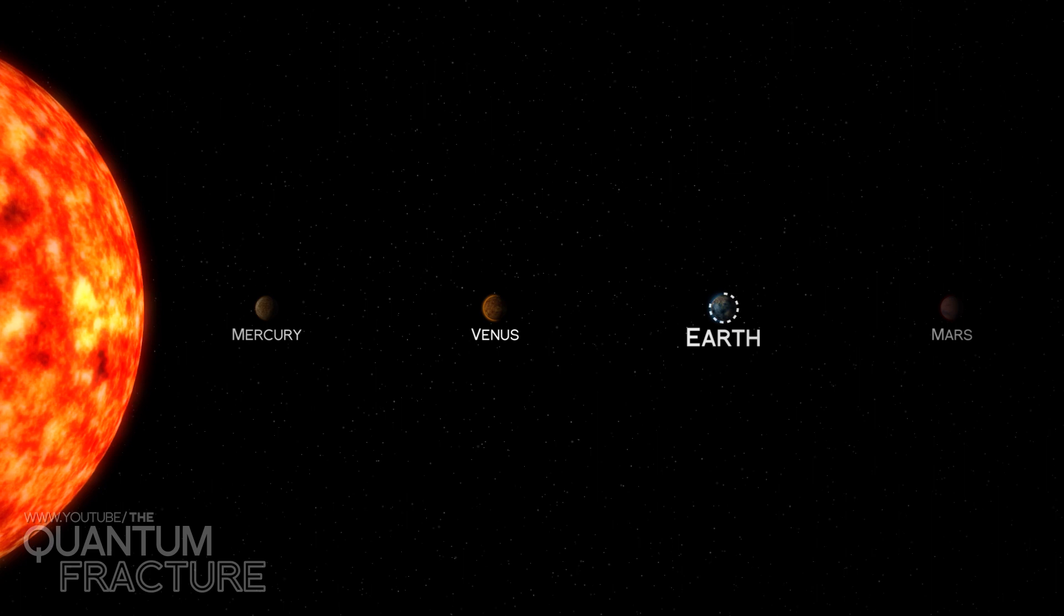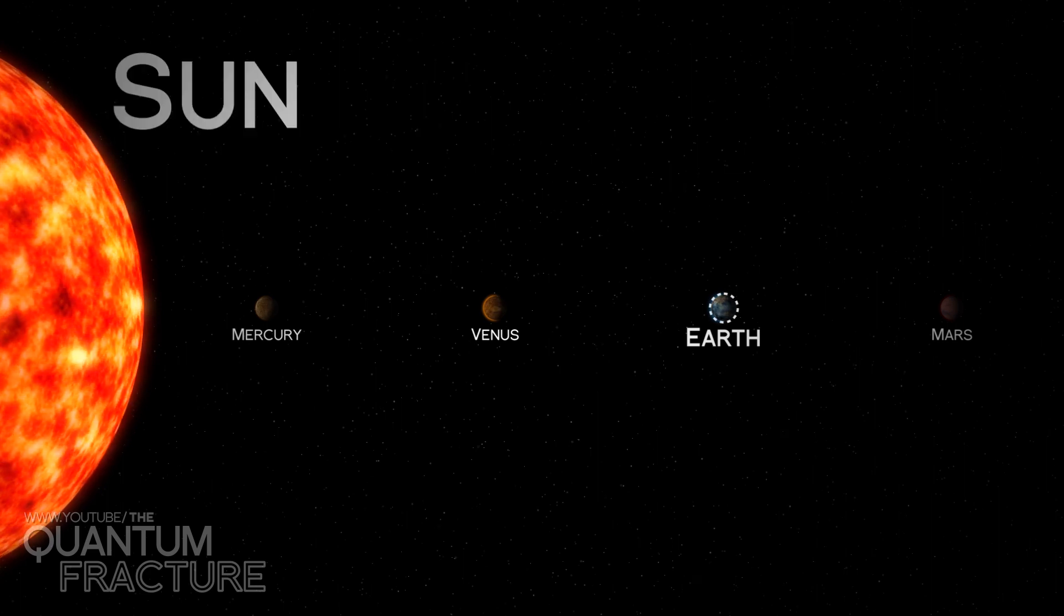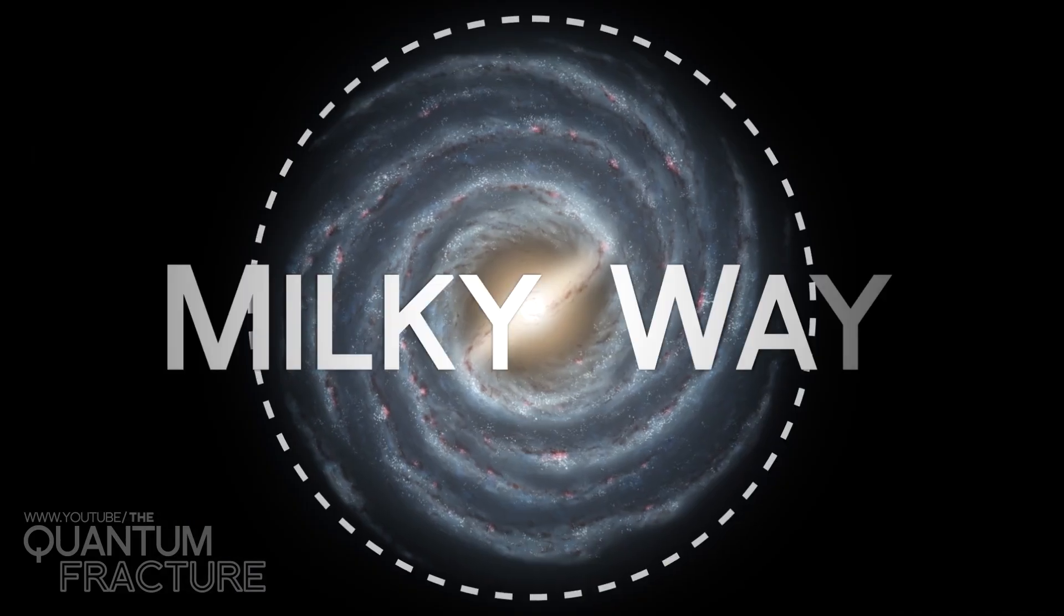Earth is the third planet orbiting the star we call the Sun. The Sun is one of the billions of stars that make up our galaxy, the Milky Way.